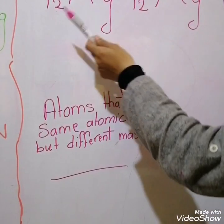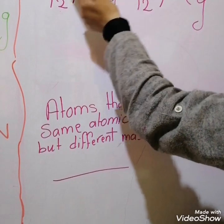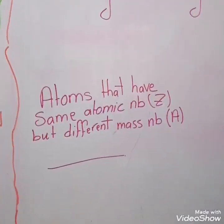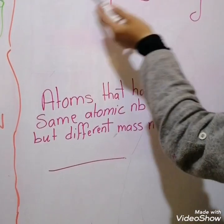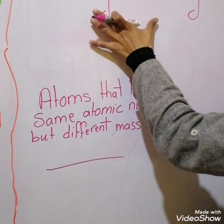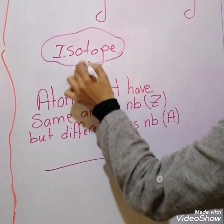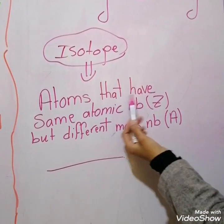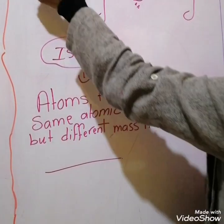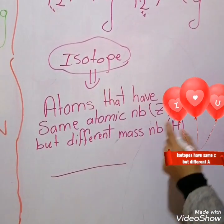Two atoms with the same atomic number but different mass numbers — for example, 24 and 25. What is the relation between these two atoms? The relation between these two atoms is isotope. So isotope is atoms that have the same atomic number but different mass number — same Z but different A.